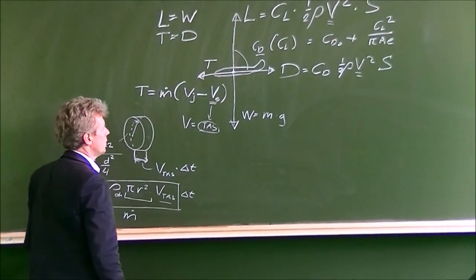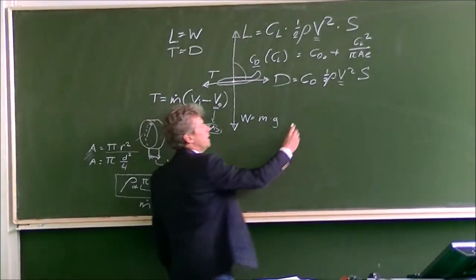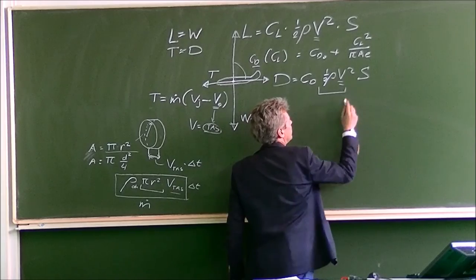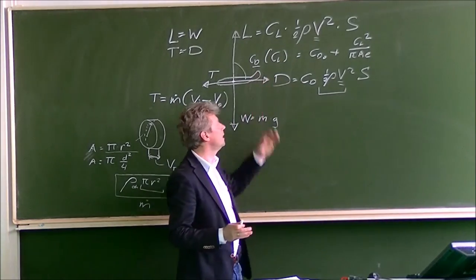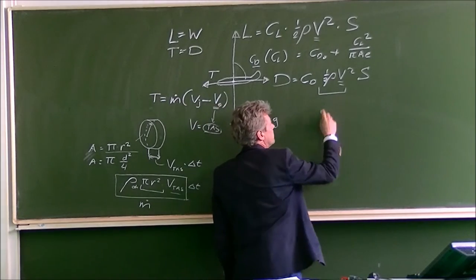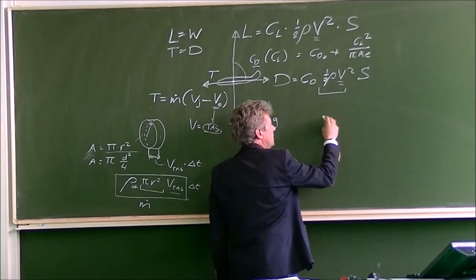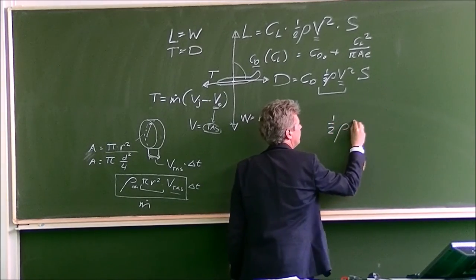Then there was also a question about equivalent airspeed and true airspeed. I mentioned the dynamic pressure here. The dynamic pressure is what the aircraft feels with its drag and the lift, but also with the instruments. And this dynamic pressure, the speed scale is based on that using this equation, half rho v squared.